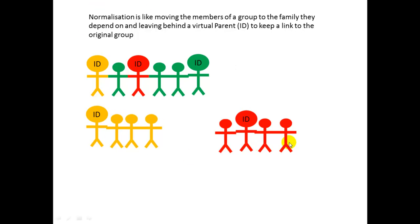We're putting each family in its own group. The greens are the original family. When we separate one group away from the original family, we leave an identifier — an ID, a clone of a parent — back in the group. Normalization is like moving the members of a group to the family they depend on, and leaving behind a virtual parent ID to keep a link to the original group.